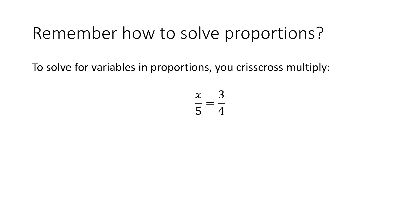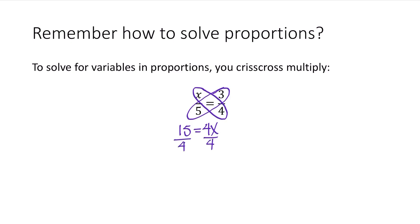When you solve for variables in proportions, you use this idea called crisscross multiply. Some of you may call it the butterfly method. What you do is you multiply these two numbers together — so 5 times 3 gives you 15. And then you multiply what's over here, x and 4, so you get 4x.